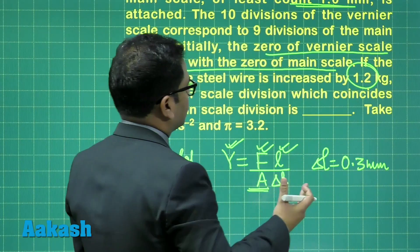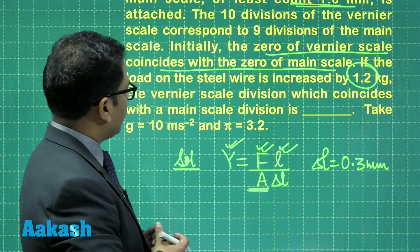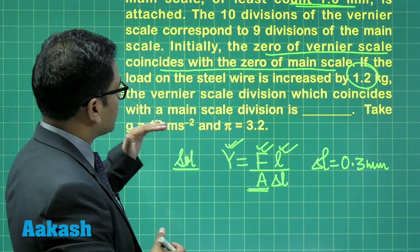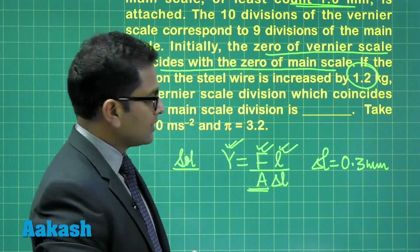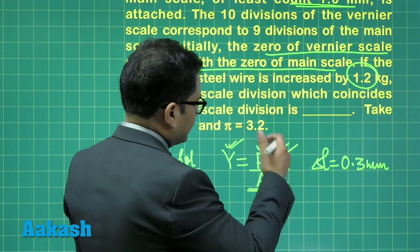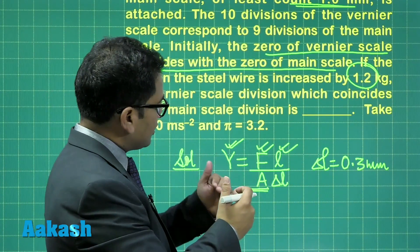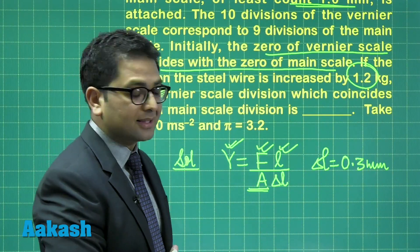Now after that, this particular elongation has to be seen in terms of the vernier scale division which coincides with the main. So right here, the 0 of the vernier would be between 0 of main and 1st of main, that you can easily imagine.